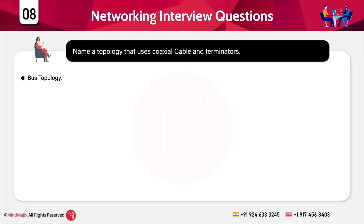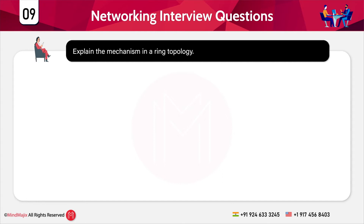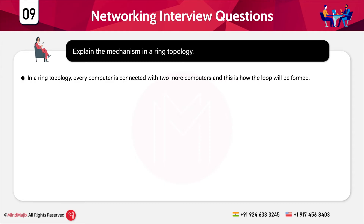The next question is: explain the mechanism in a ring topology. In a ring topology every computer is connected with two or more computers, forming a loop. Data flows only in a single direction — the source computer transmits the data in a circle, each computer checks whether the data is intended for it, and if yes it picks up the data packet; if not, it passes it to the next computer until it reaches the destination.